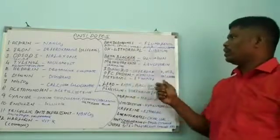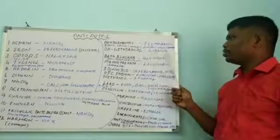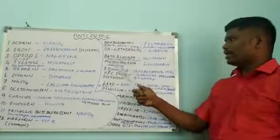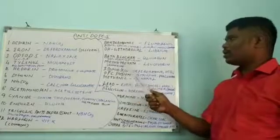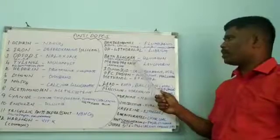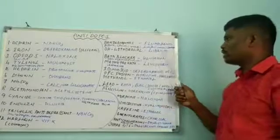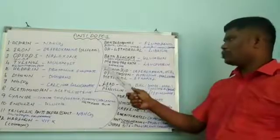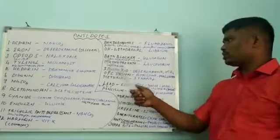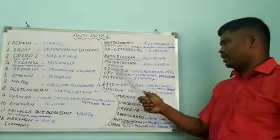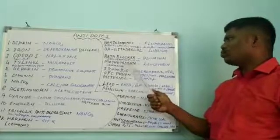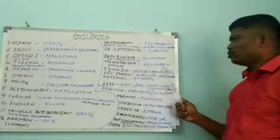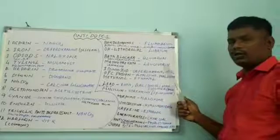In alcohol withdrawal, Librium is used as an antidote. Beta blockers like atenolol, metoprolol, propranolol overdose — glucagon is used as an antidote. Methotrexate is a chemotherapy drug. In overdose of methotrexate, leucovorin is used as an antidote.